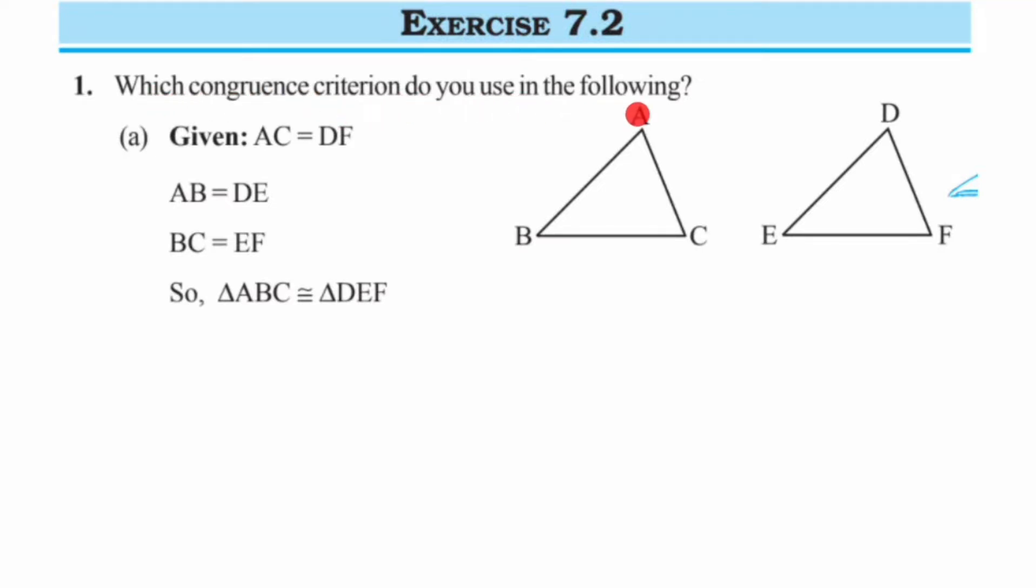They have given us a figure with triangles, a few conditions, and they've also given that these two triangles are congruent. But what is the congruency criteria we're using here to show that these two triangles are congruent?